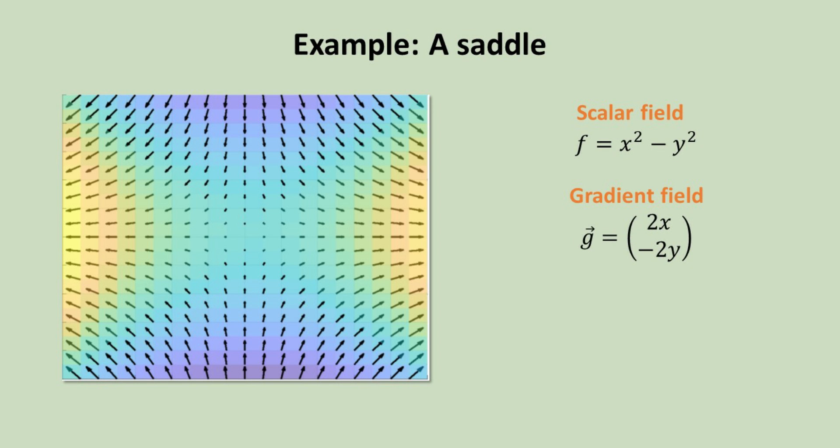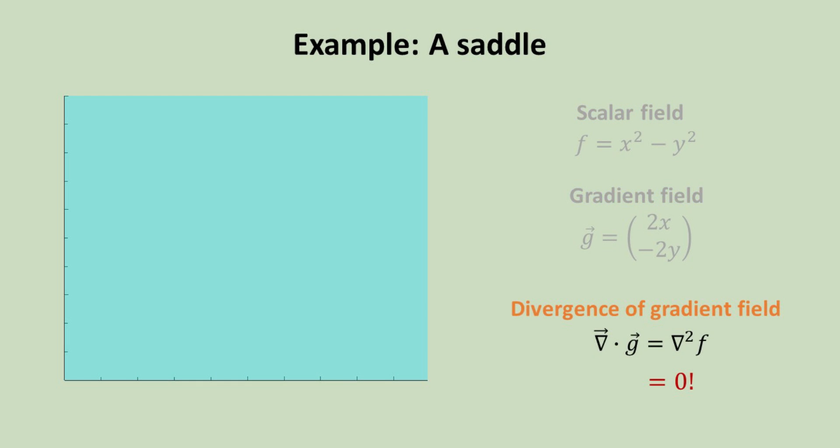Let's conclude with a scalar field with a saddle point. Here, the surface curves upward in one direction and downward in another, with the saddle point located in the center of the plot. The gradient field is not zero in this case, which is obvious since the slope is not zero. However, when we inspect its divergence, it is zero. Thus, the saddle point is also a divergentless place. The gradient field is being source and sink from outside this region.